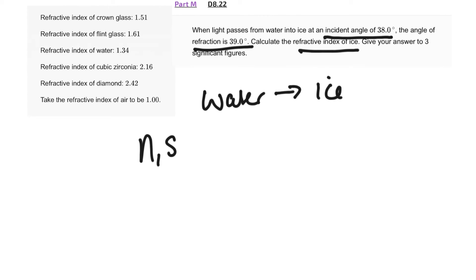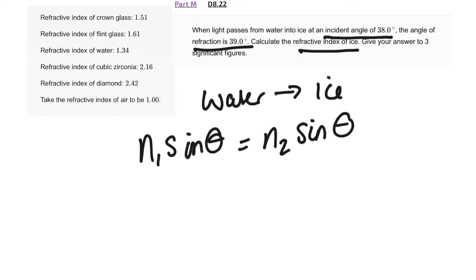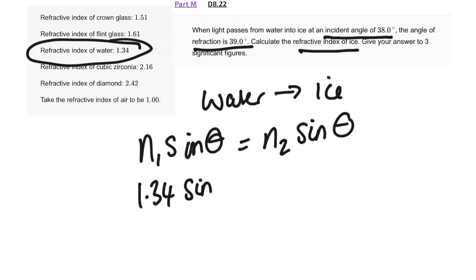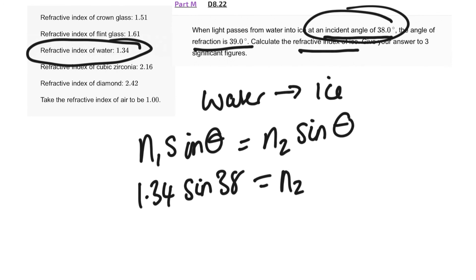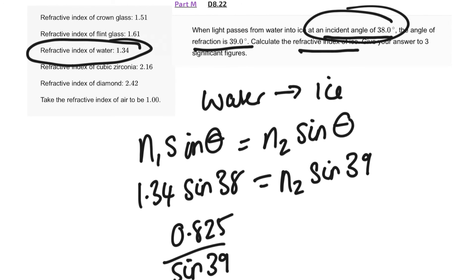We use the equation n1 sin θ1 = n2 sin θ2, which is given on the AQA data sheet. The refractive index of substance 1, water, is given as 1.34. So: 1.34 × sin 38° = n2 × sin 39°. Rearranging gives 0.825 divided by sin 39°, which gives a refractive index of ice of 1.31 to three significant figures.